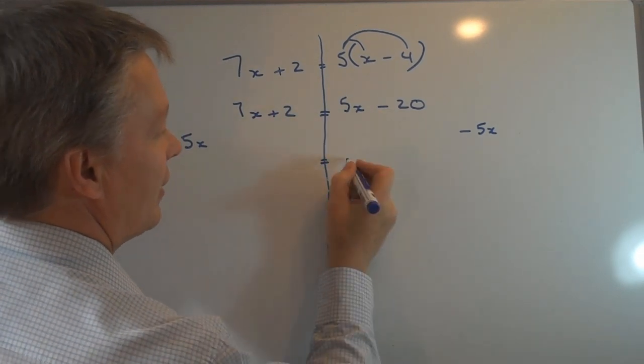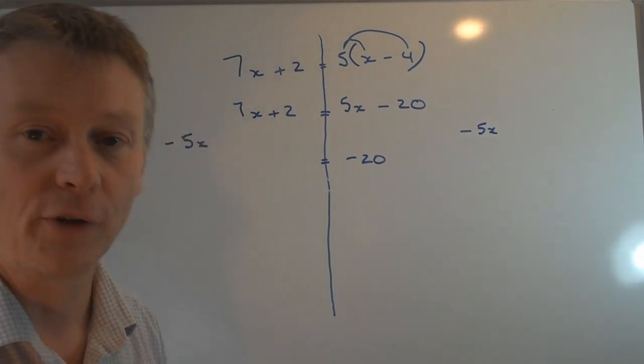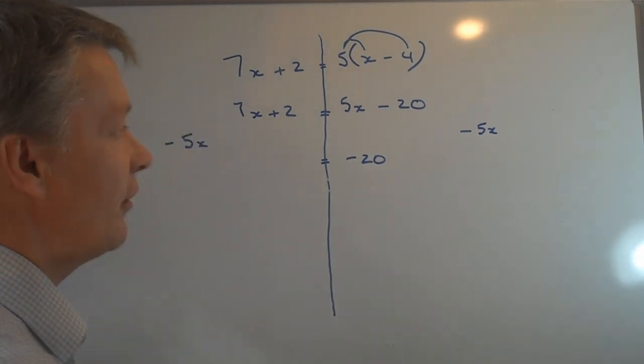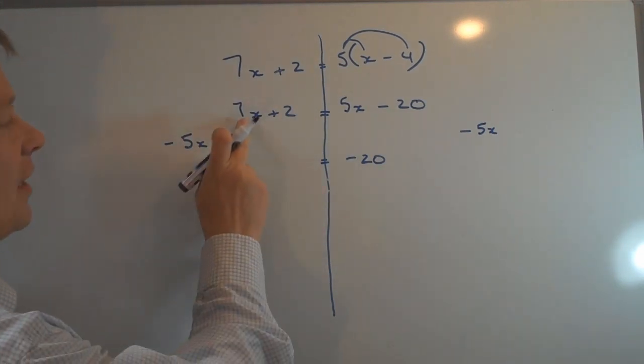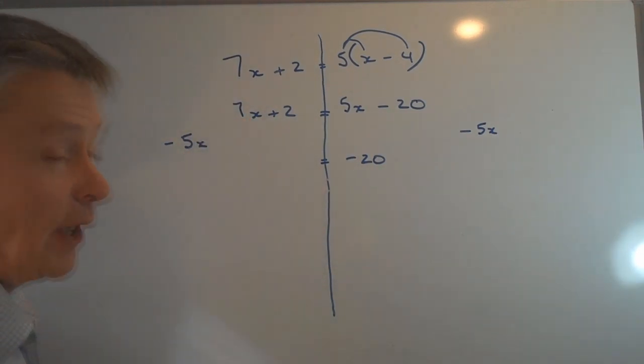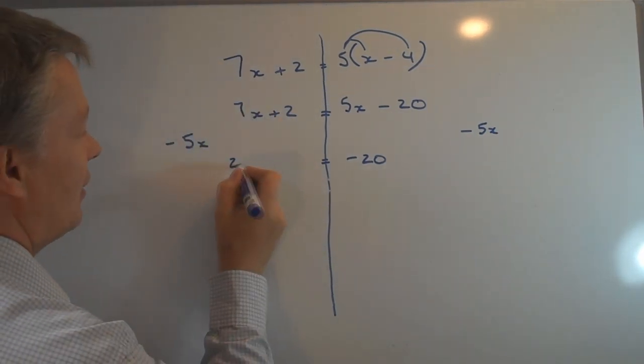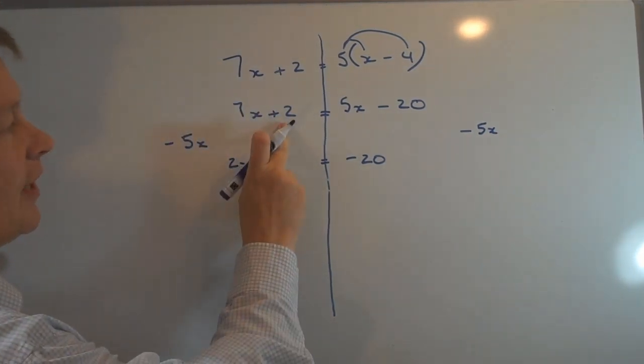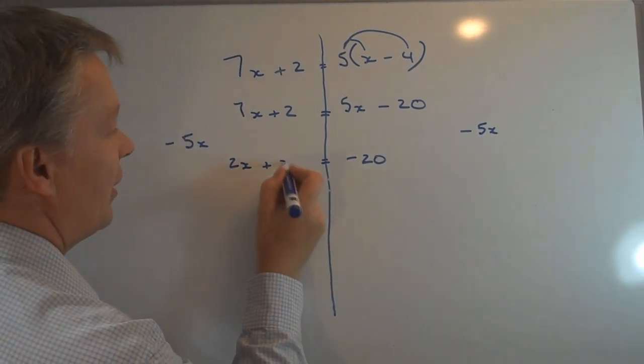So 5X take away 5X means that on this side I only have a value left of minus 20, and don't forget your positive or your minus signs, you need to make sure that they remain within the equation. On this side I have 7X take away 5X is 2X, so I have 2X but I mustn't forget I have plus 2 on this side which I need to take into account.